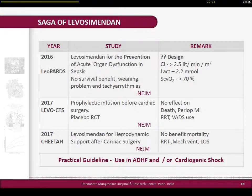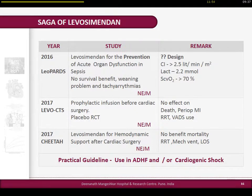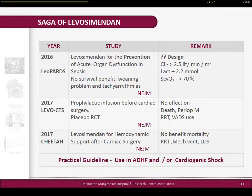I don't know why levosimendan is associated with big cats and canines, but these are the names of the trials, and all three are published in the New England Journal. The LEOPARDS study from the UK used levosimendan for prevention of acute organ dysfunction in sepsis - I am skeptical about its design because there were no cardiac index, cardiac output, stroke volume, or ScvO2 parameters used for randomization. It was simply levosimendan versus placebo for all septic shock patients - of course, it was a negative study. LEOCAT and CHEETAH, published just two months ago, focused on levosimendan in perioperative cardiac surgery, but neither showed significant survival benefit.